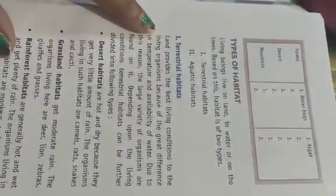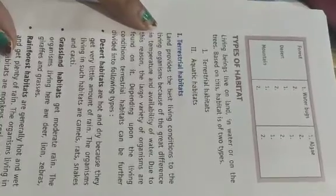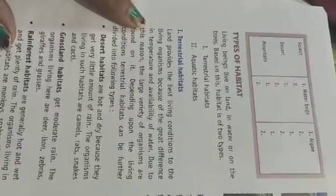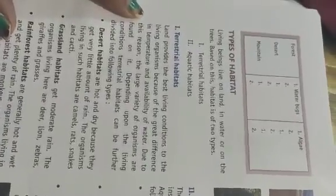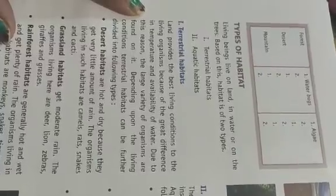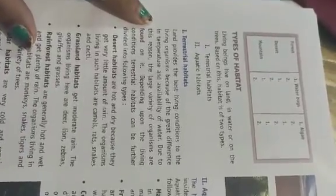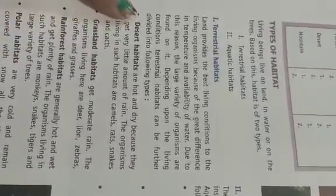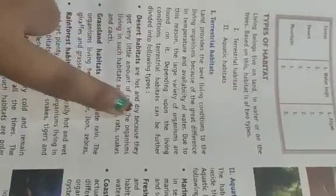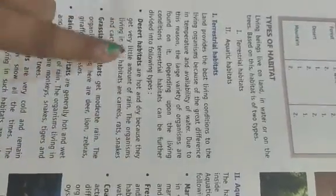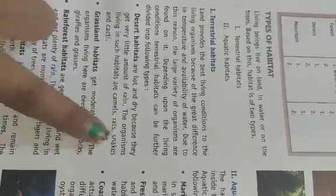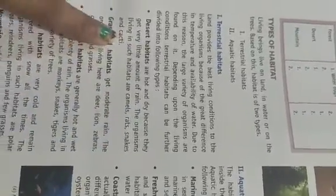Land provides the best living conditions to living organisms. Ismein bhoat zyada difference aata hai temperature mein aur water ki availability mein. Due to this reason, a large variety of organisms are found on land. Terrestrial habitat is further divided into types. First is desert habitat — yahan par hot and dry hoga because wahaan rain bhoat kam hoti hai. Organisms found here: camel, rat, snake, and cactus.